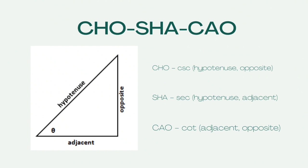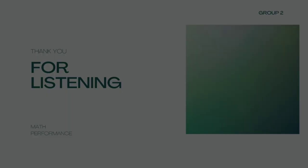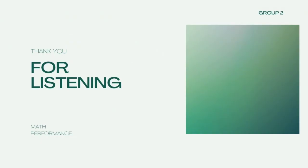So these are the 6 trigonometric ratios of a right triangle. Thank you for listening. I hope you enjoyed this video. Please like, share, and subscribe, and click the notification bell for more updates. Bye!